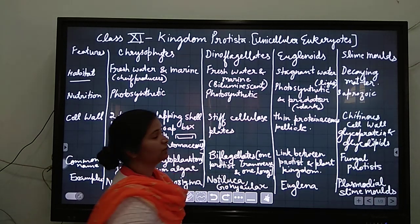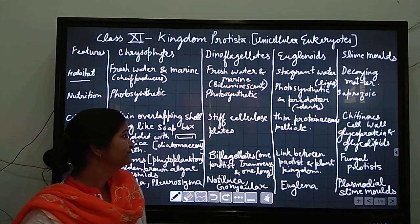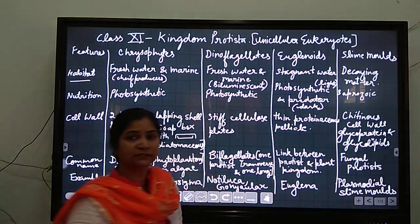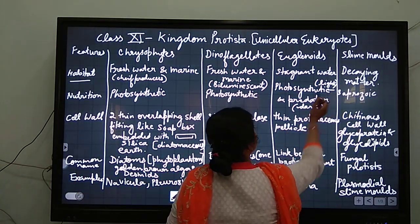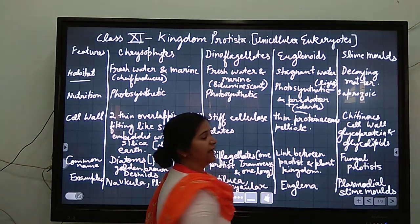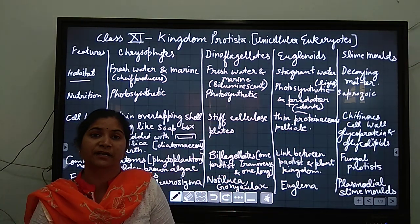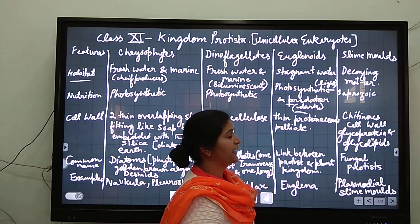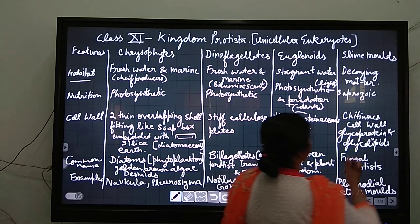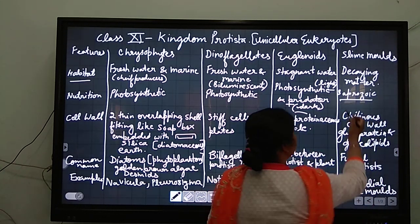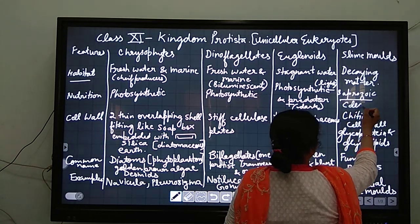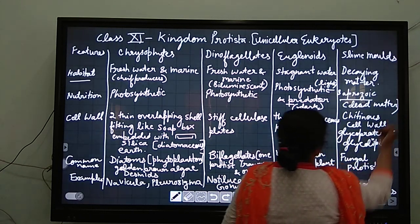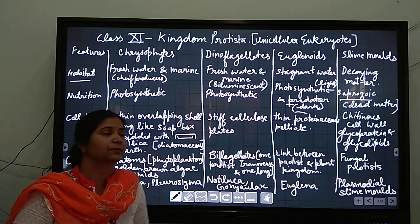Dinoflagellates are also photosynthetic in nature. Now coming to the euglenoids, they are photosynthetic in the presence of light and they are predatory in absence of light. In dark they will be predatory in their habit and nutrition, and in light it will be photosynthetic. Now slime molds, they are saprozoic - they derive nutrition from dead matter. They digest dead matter and then get nutrition.